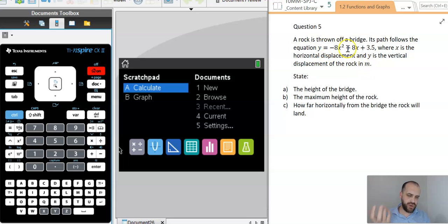All right, so this question here is a quadratic equation, and you want to find some key points on that quadratic equation. The height of the bridge where the rock was thrown from, the maximum height of the rock, and how far across it moves.